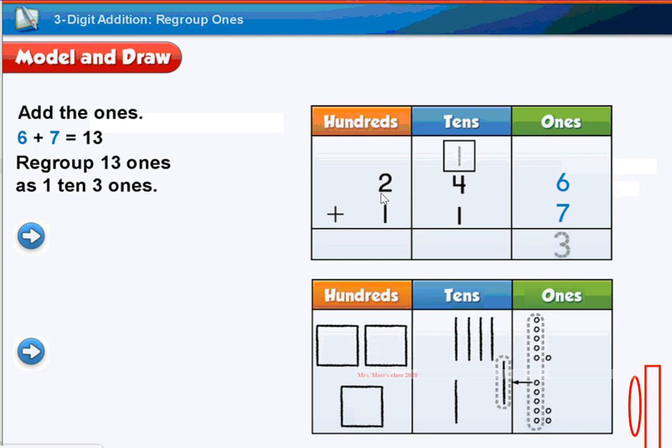So let's do that up here. Our number says 246 plus 117. And whenever we add, we always start in the ones place. And here in the ones place, it says 6 plus 7.